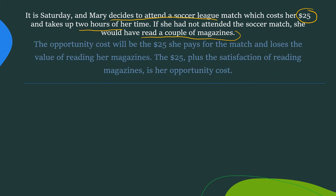The opportunity cost will be the $25 she pays for the match plus the value of reading her magazines. The $25 plus the satisfaction of reading her magazines is her opportunity cost. Note here how it's not just money that she's losing — her opportunity cost also includes the satisfaction of reading magazines.